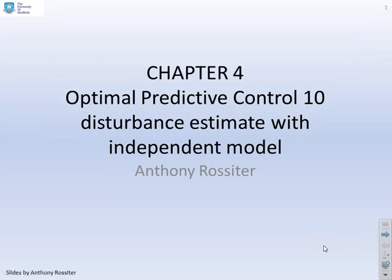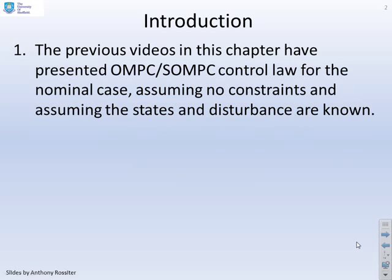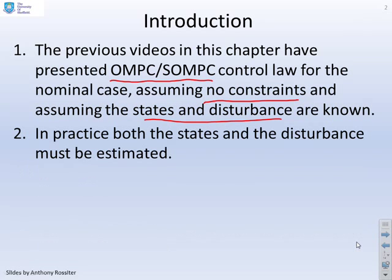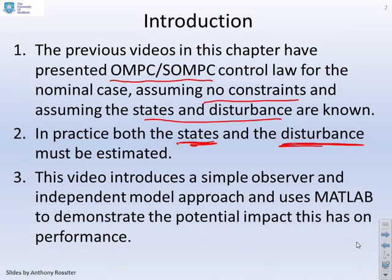This video looks at optimal predictive control where you need to estimate the disturbances. The previous videos in this chapter presented the OMPC or SOMPC control law for the nominal case, assuming no constraints and assuming that states and disturbances are known. In practice, both the states and the disturbance have to be estimated. This video will introduce a simple observer using an independent model approach and we're going to use MATLAB to demonstrate the potential impact this has on performance.